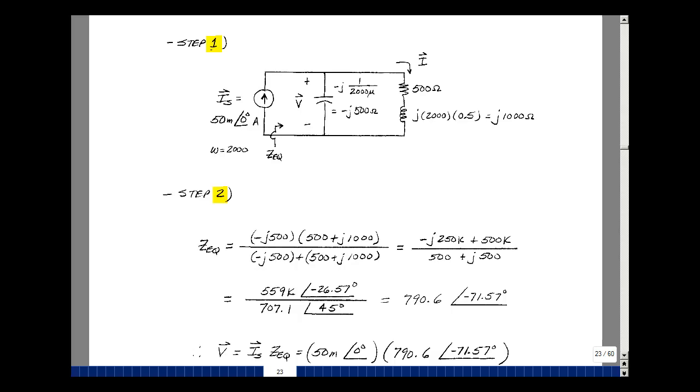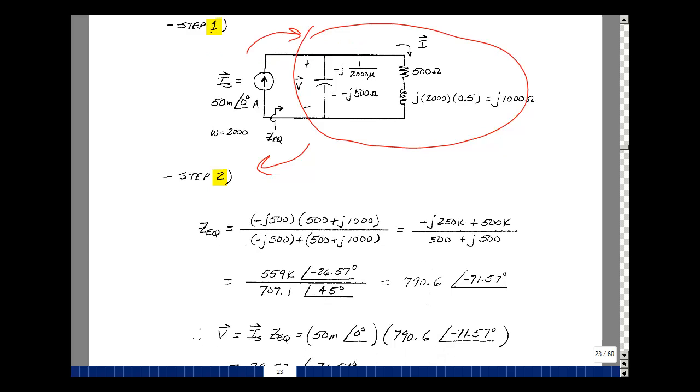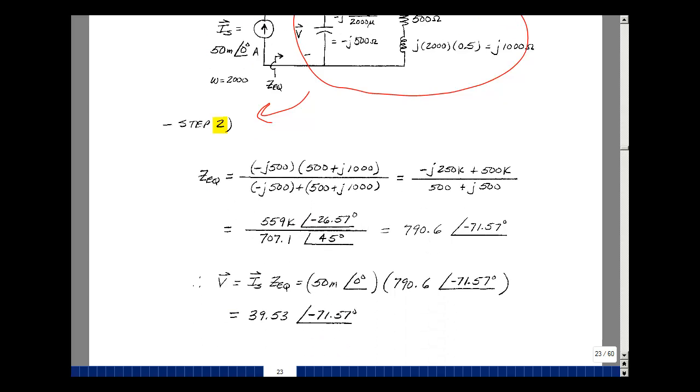So knowing the impedance of the parallel combination, let that current flow in there, come back out the other side and create a drop of V. So I'm just going to multiply our impedance by the current. 50 milliamps at angle zero times 790.6 at angle minus 71.57 degrees. So multiply these two together, get 39.53. And then add these two angles to get minus 71.57.